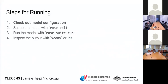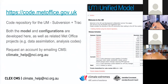There are a few steps to running the UM with Rose: checking out the configuration, setting up the model, running the model, and doing something with the output so you can do your science. The code and configuration for the UM is stored on the Met Office's code server at code.metoffice.gov.uk. This includes the model configurations as well as different add-on bits like data assimilation stuff.